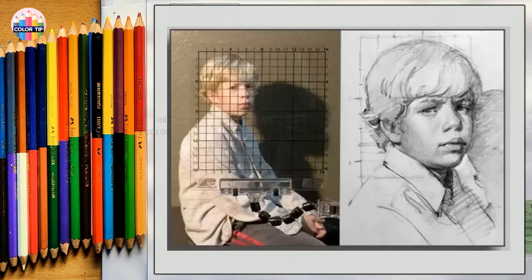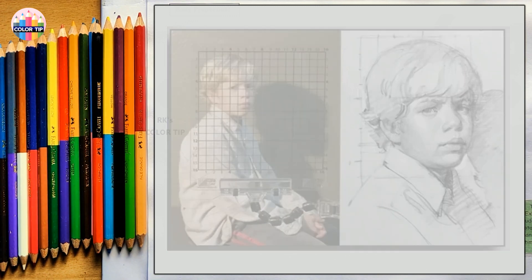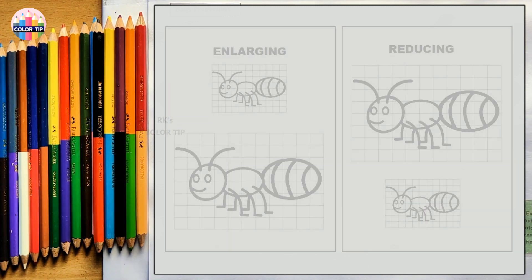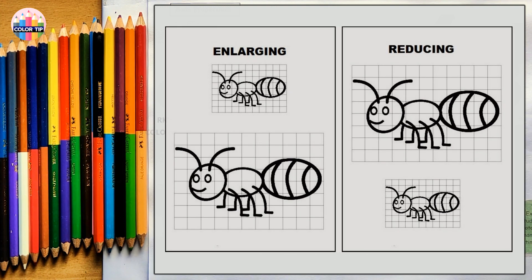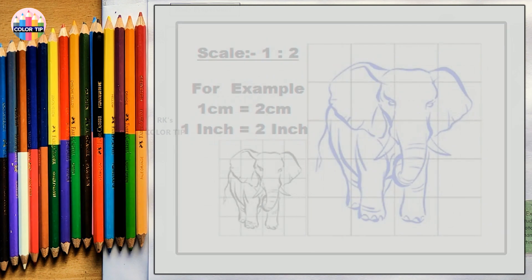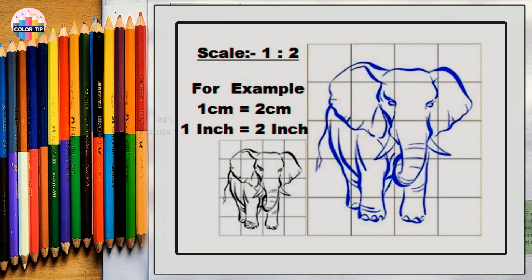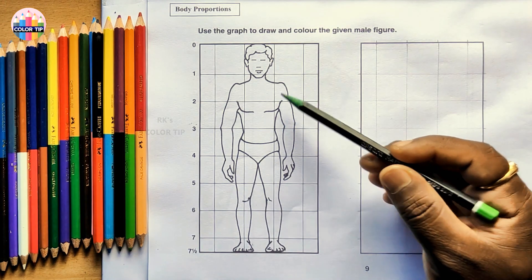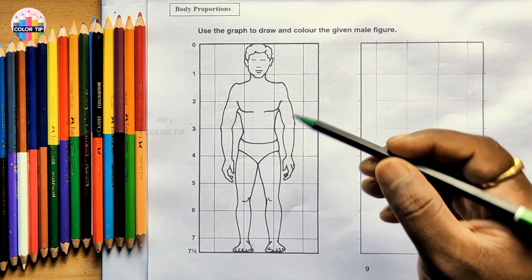The graph method is especially used for increasing or reducing the size of a picture to a particular size and proportion. For example, if you want to make the picture in double size or reduce it to half, you use this graph method. Here the main figure has been given.